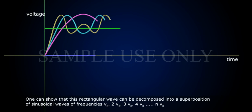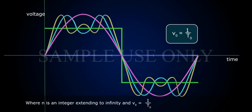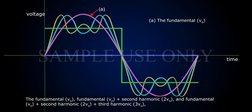One can show that this rectangular wave can be decomposed into a superposition of sinusoidal waves of frequencies V0, 2V0, 3V0, 4V0, so on, NV0, where N is an integer extending to infinity, and V0 equals to 1 by T0.